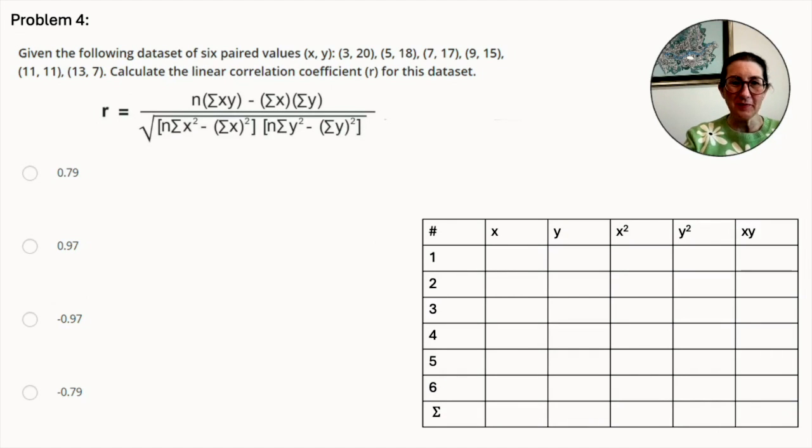Problem number 4. Given the following data set of 6 paired values for x, y, calculate the linear correlation coefficient r for this data set. To find the linear correlation coefficient r, we use the following formula for r. The easiest method to use this formula is to tabulate our data as follows.